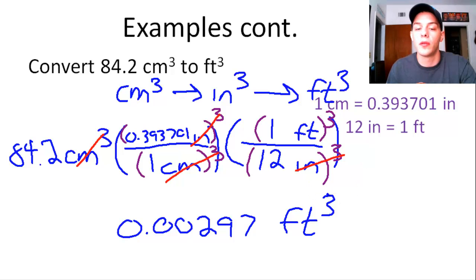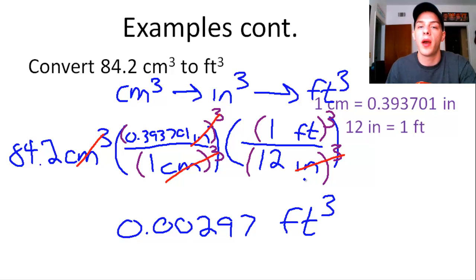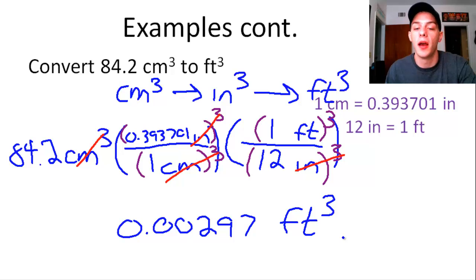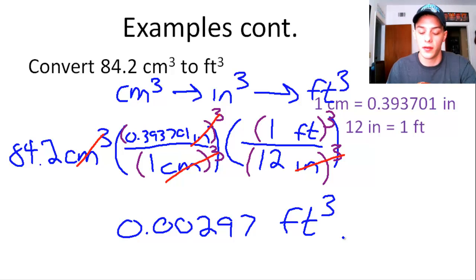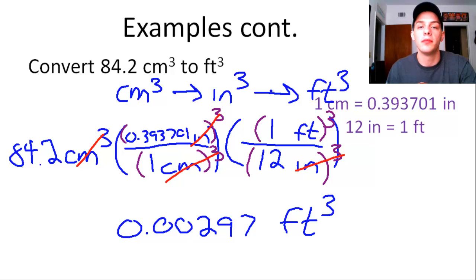That is how you do conversions when you have to raise the unit to a power — really the hardest part of doing conversion factors. But again, it's just simple multiplication; you're raising things to a power, just multiplying something by itself a certain number of times. It's a lot easier than most people make it out to be, and hopefully this video has made it a little bit easier for you. Have a good one.